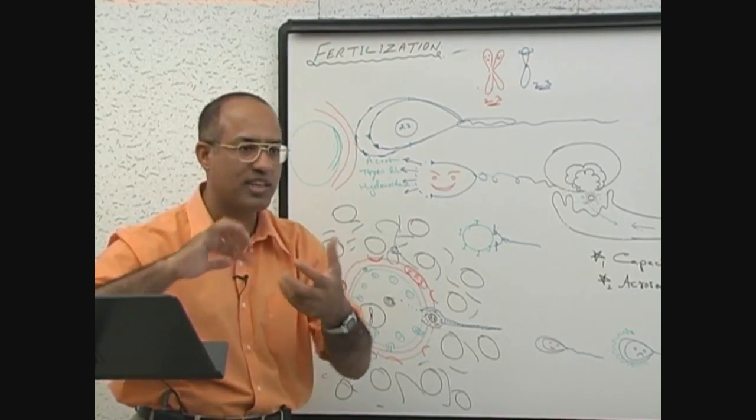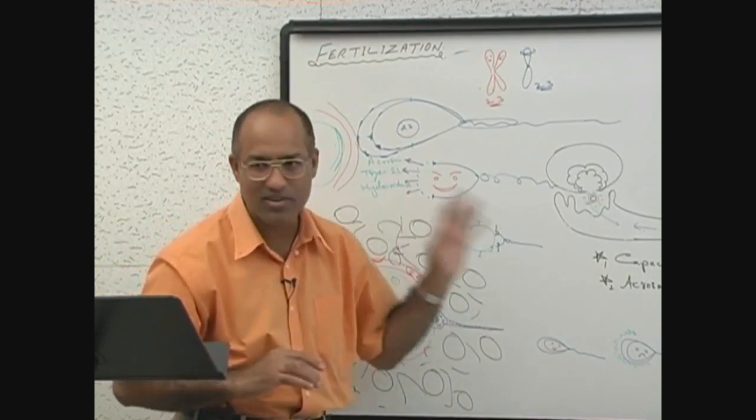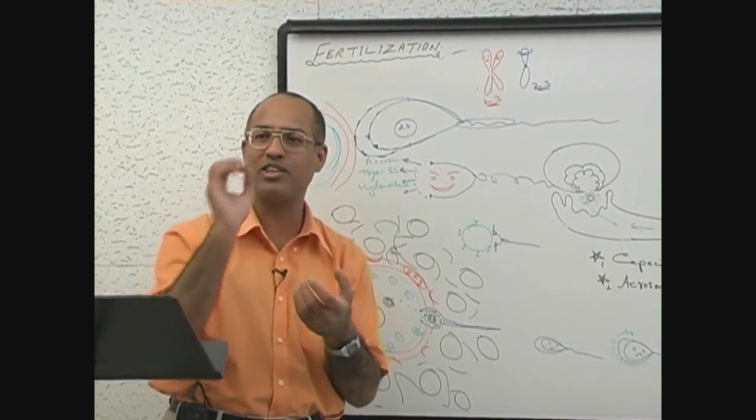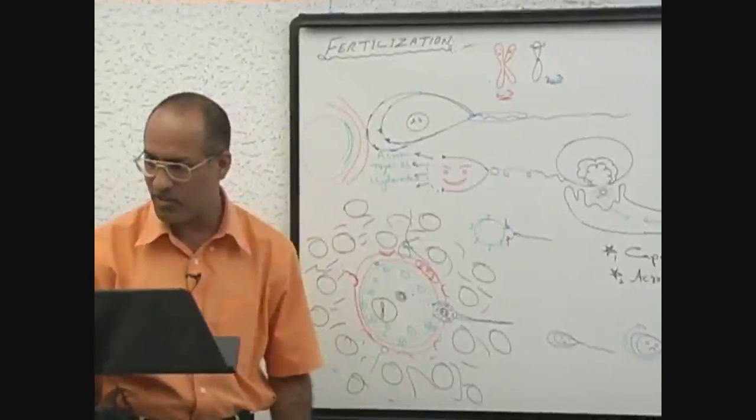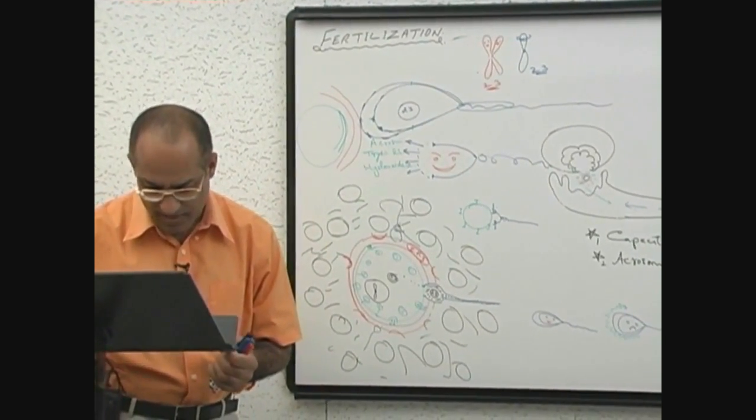That really locks the membranes of the two cells together, so that this sperm which has travelled such a long travel should not, after reaching to the ultimate place, fall away. Is that right? So this is how they are held together. Right?